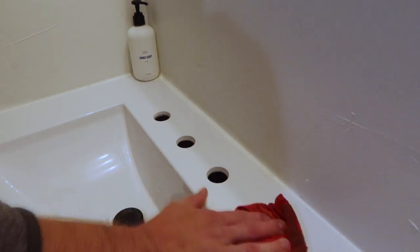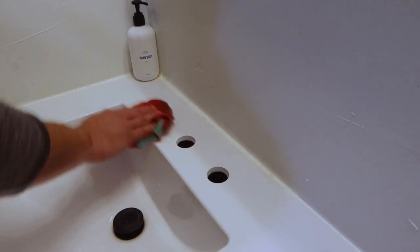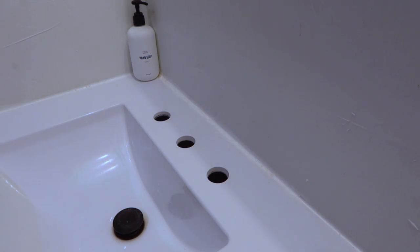Now as you can see from this countertop, this is what's considered a widespread faucet, which means the holes are spread far apart. The Grove faucet is a single hole faucet, so it only requires a single hole.